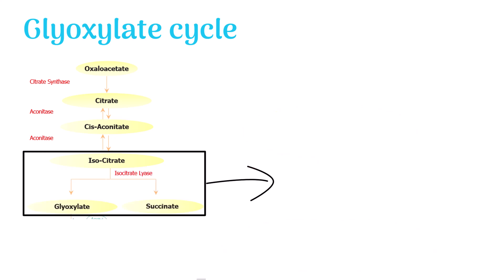Let's see what happens ahead. In the next reaction, isocitrate is cleaved into two products: glyoxylate and succinate. The enzyme involved in this reaction is isocitrate lyase.